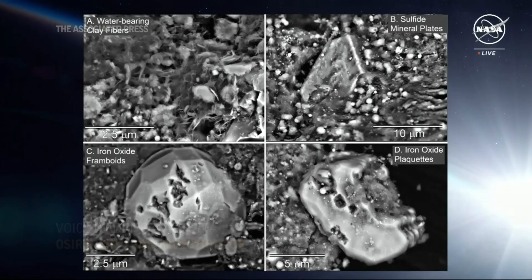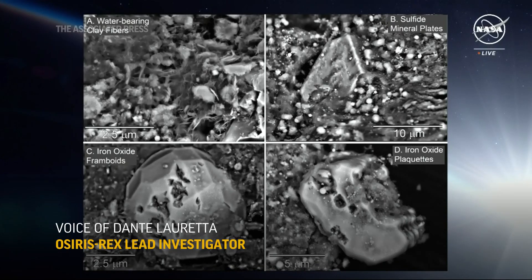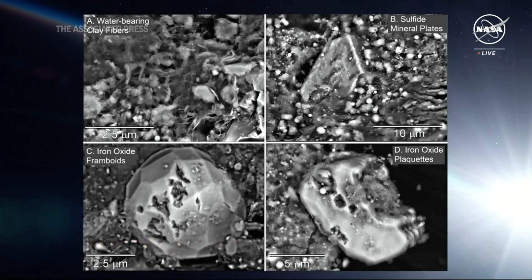The first panel there in the upper left shows the water-bearing clay minerals, which have a fibrous kind of structure. We call this serpentine because they look like serpents or snakes inside the sample, and they have water locked inside their crystal structure.